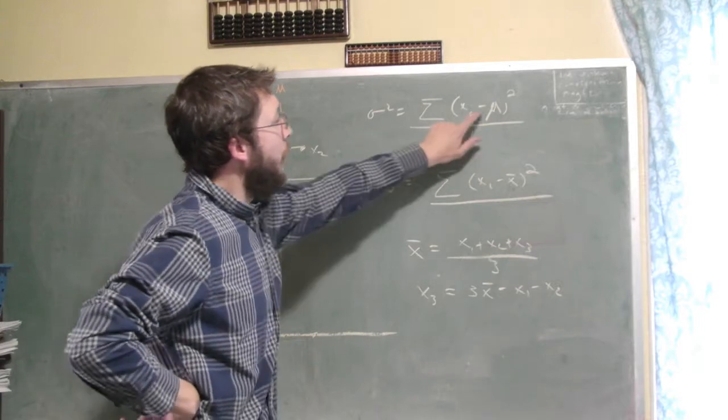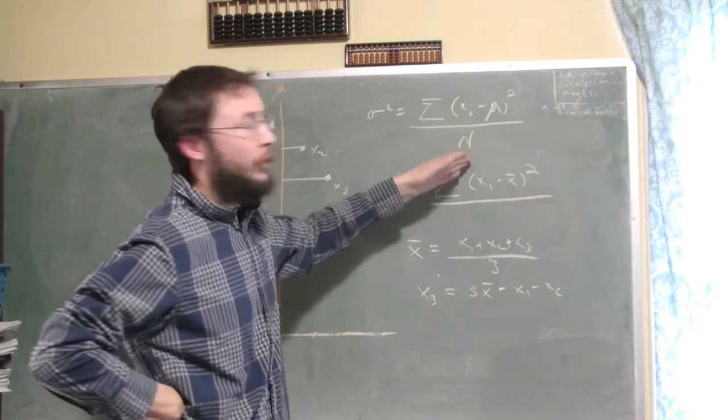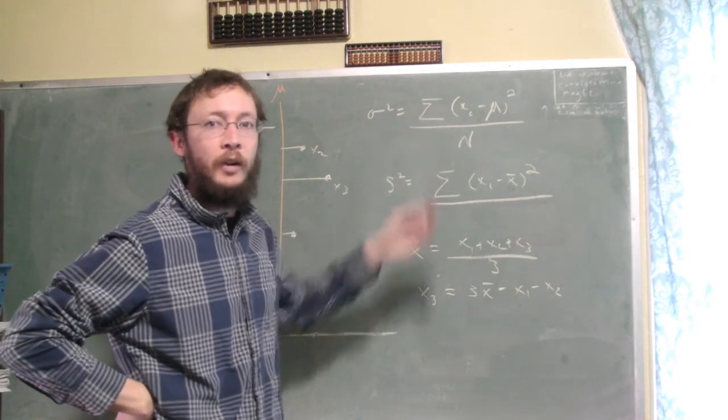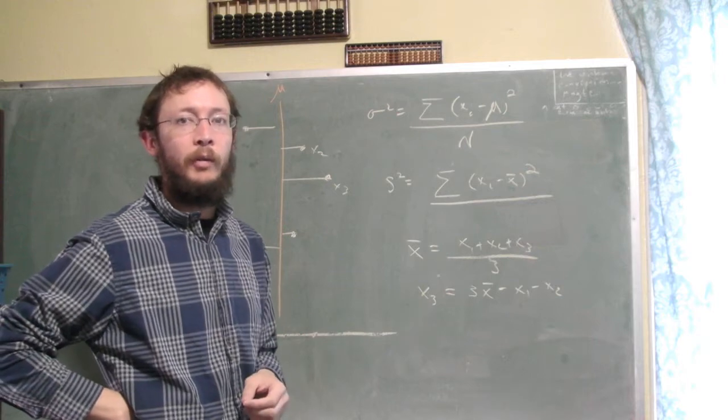So the variance then says, take those squared distances, they're all positive now, and let's average the squared distance. So the variance, the population variance, is really just what is the average squared distance from the mean.